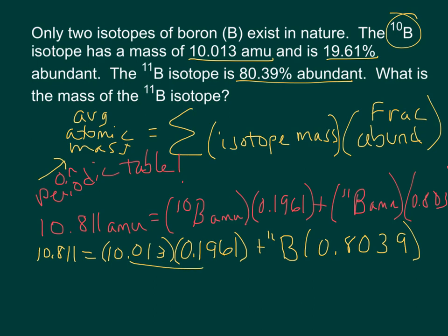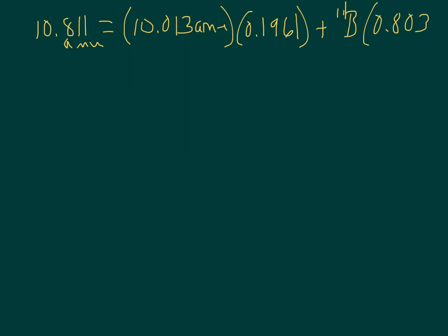So now if we go ahead and multiply these two guys together and subtract this off from this side, add it to the 10.811, and then we're going to divide by this 0.8039. So I'm going to go to the next slide and do that so we can show these steps in solving it. So just rewriting, 10.811 is equal to 10.013 amu times 0.1961, and then plus B-11 times 0.8039.